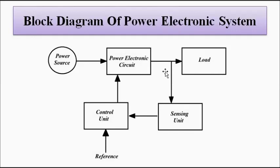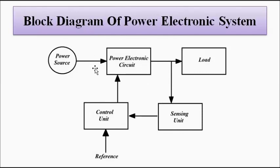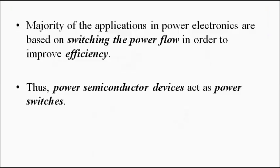Depending on the error signal, the circuit makes the necessary modifications so that the load requirements are matched and it supplies power as close to the load requirements as possible. As long as there is a mismatch, circuit modifications take place; once the error is minimized, no further modifications are required. This is the basic block diagram of a power electronic system — power systems handles the source, electronics handles the semiconductor devices, and control systems handles the closed-loop feedback.